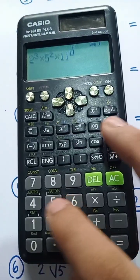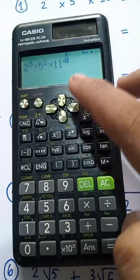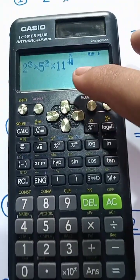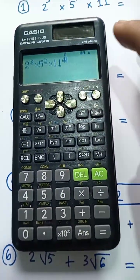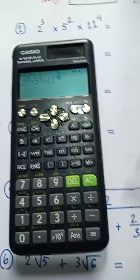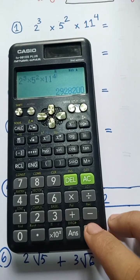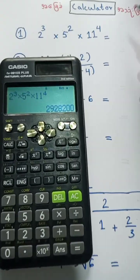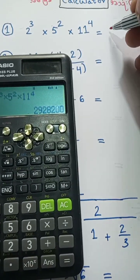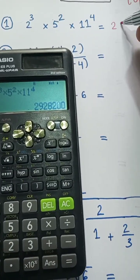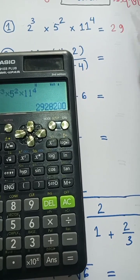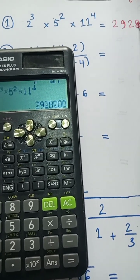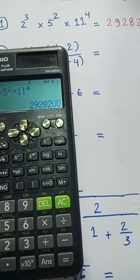Now we have 4. 2.5 squared, 11 power 4. Here we have 2.9, 2.8, 200.